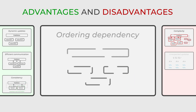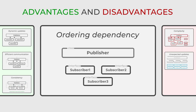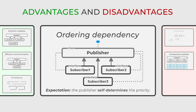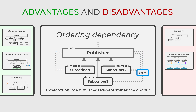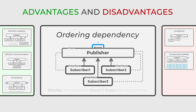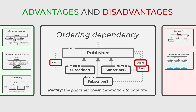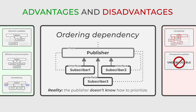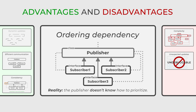Finally, the ordering in which observers are notified can be an essential factor in some systems, and the Observer pattern does not inherently provide a way to manage this. This can lead to design challenges and result in code that is hard to maintain.